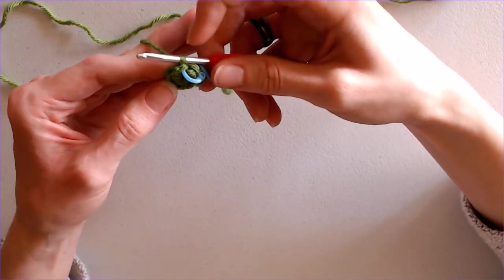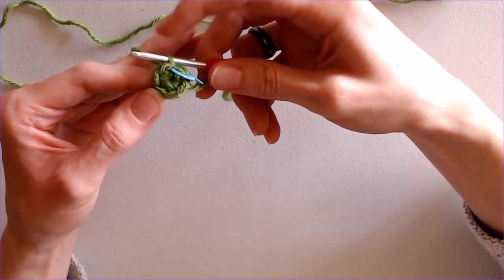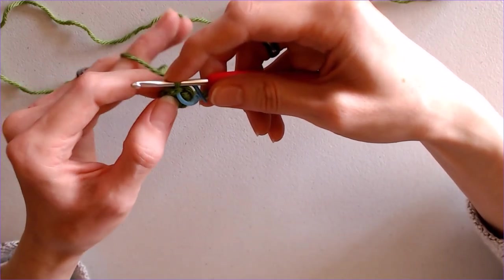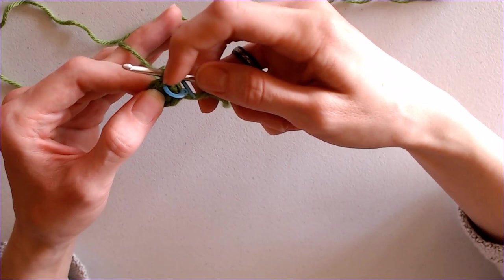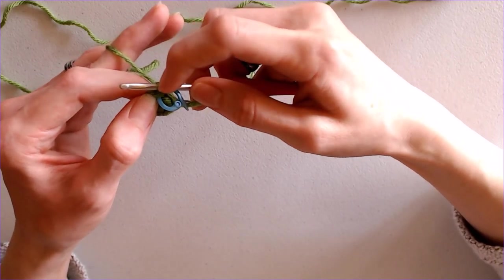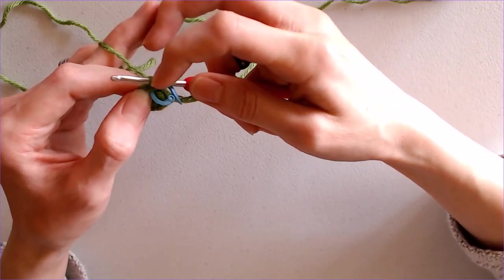So what we're going to do instead is do not chain one, just keep your loop as it was on your hook. You're going to skip the very first stitch and any stitches that are supposed to be worked into it on that round; we're going to add them back in at the end.